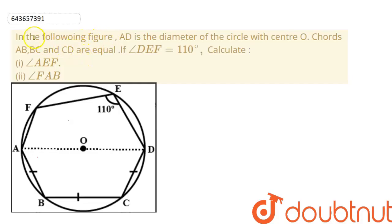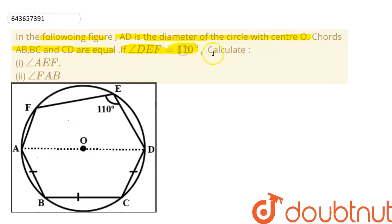Today we are going to discuss one question on circles. From the given figure, AD is the diameter of the circle with center O. The chords AB, BC, and CD are of equal length. The measure of angle DEF is 110 degrees. We need to calculate two angles: angle AEF and angle FAB.